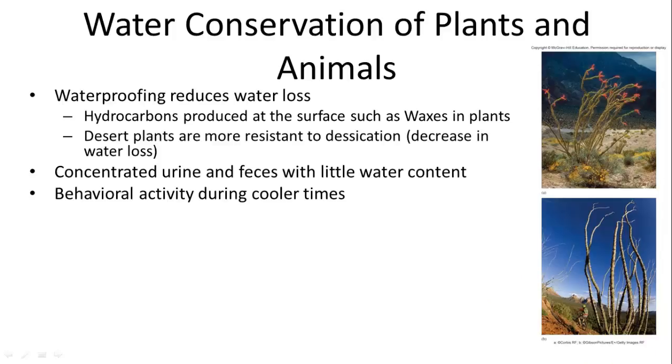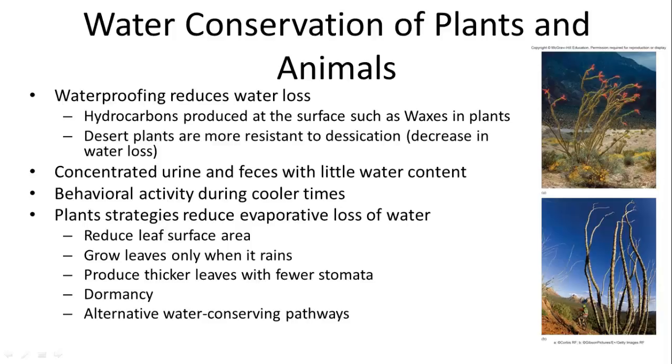So, one of the ways, if you can't increase the amount of water intake, you can reduce the amount of water lost. So waterproofing is one way in which you can do that, and hydrocarbons, which are repelling water by nature, they are lipids, are produced at the surface, such as waxes in plants. And desert plants are also more resistant to desiccation because of this thick cuticle layer of wax. You can also concentrate your urine and feces so that they have very little water content. Behaviorally, animals more than plants can make sure that they are active during times when it is cooler. Plants will reduce evaporative water loss by reducing their leaf surface area, so they can have more pointy leaves. They grow leaves only when it rains, so they can go into periods of dormancy. And they can produce thicker leaves that have fewer stomata.